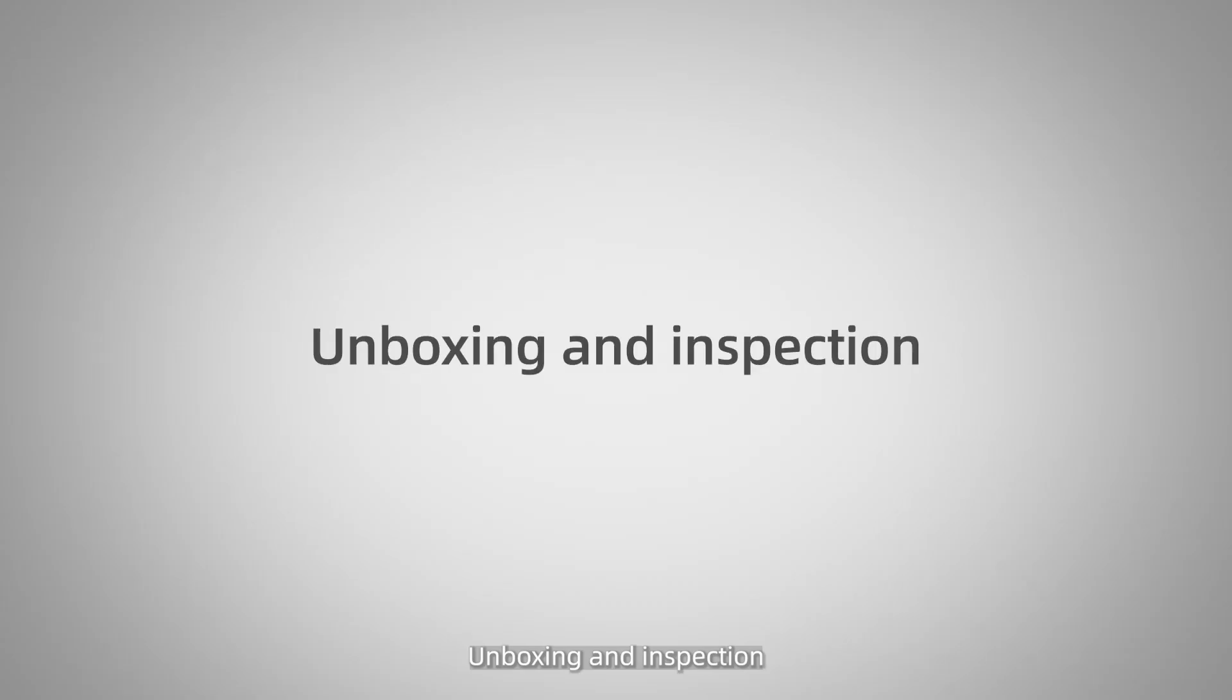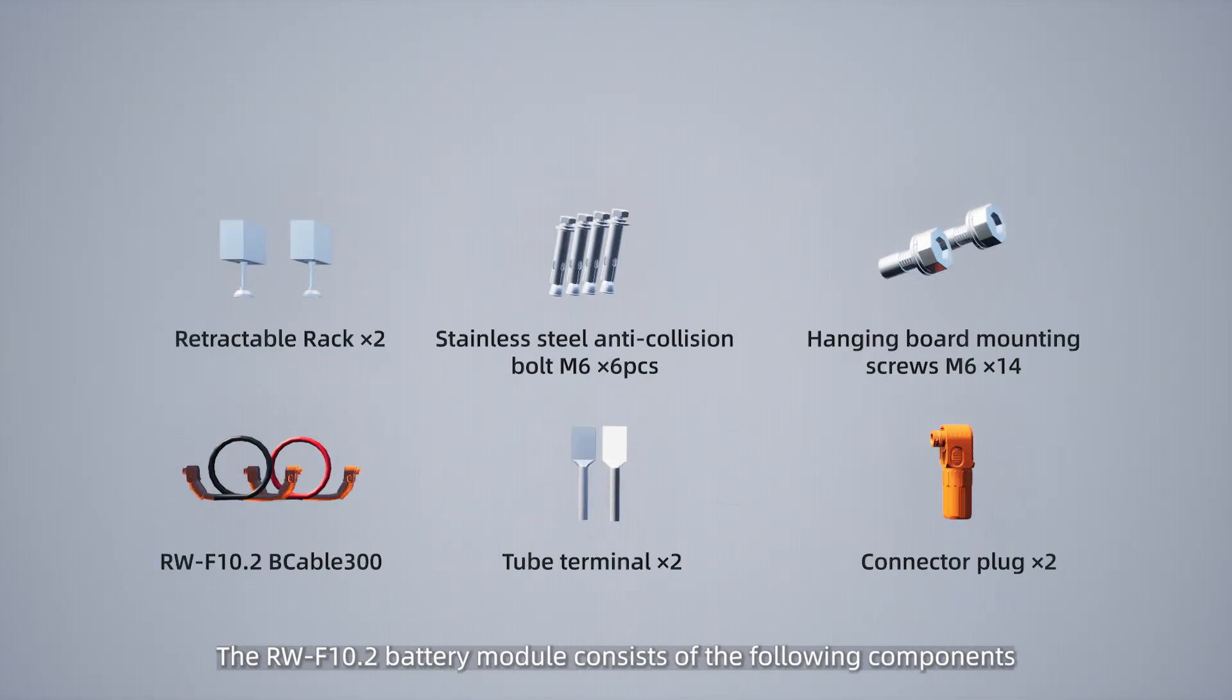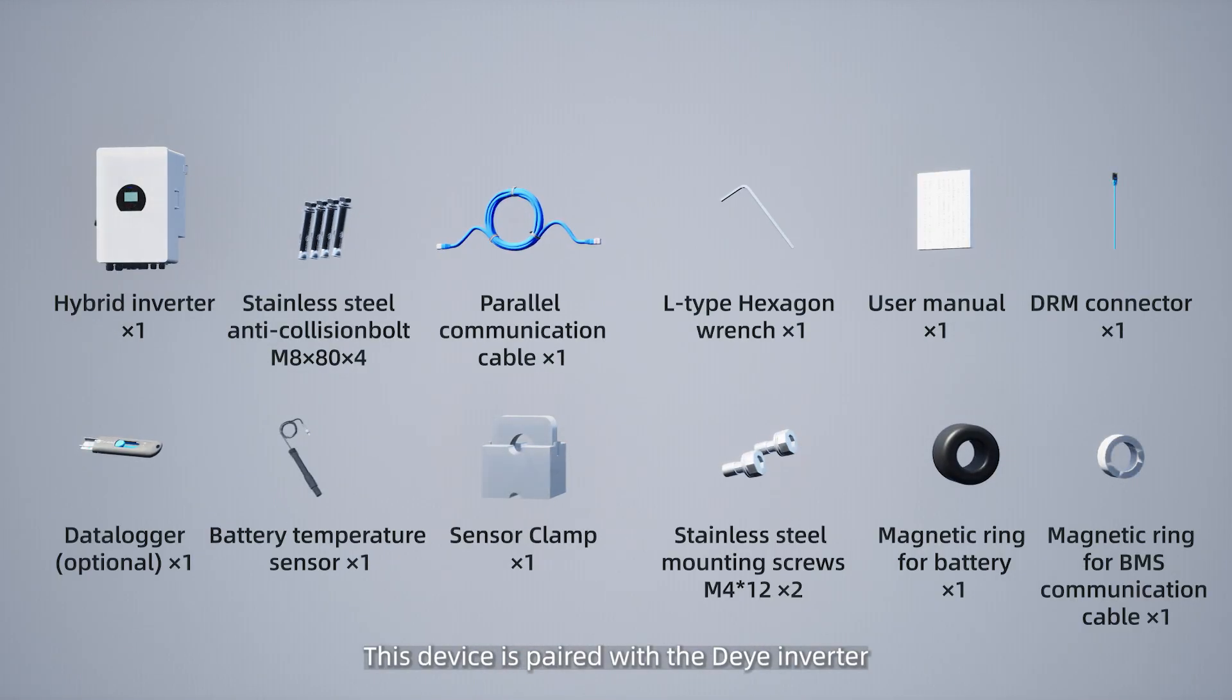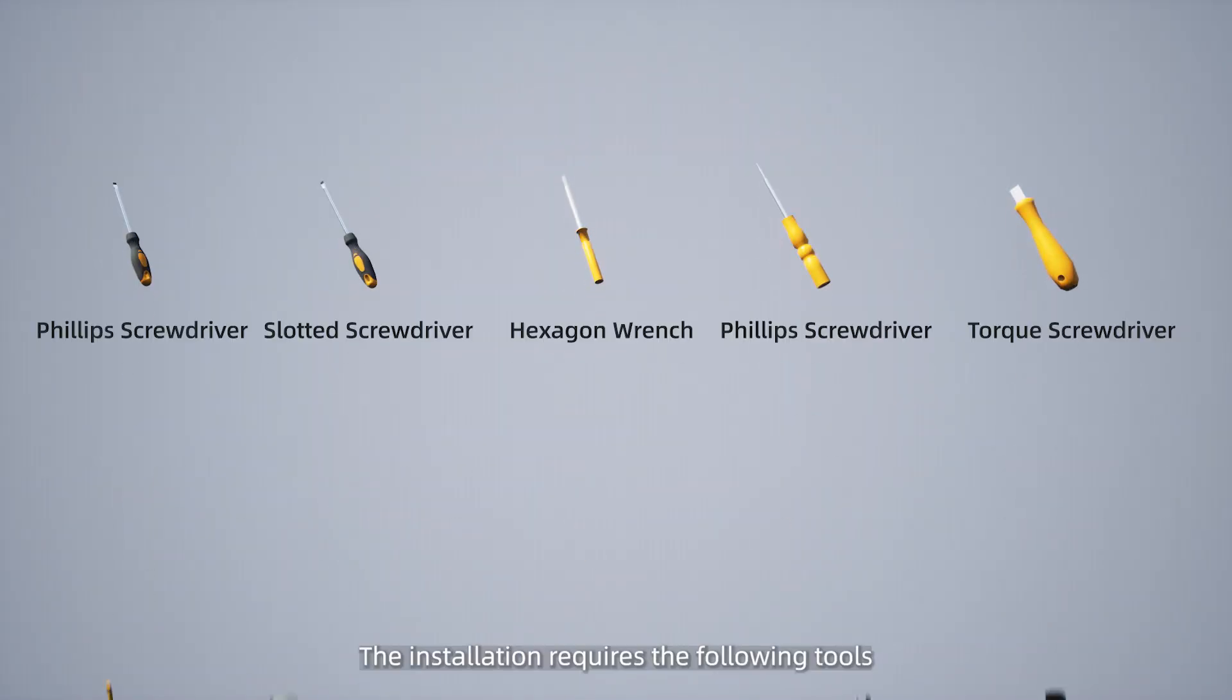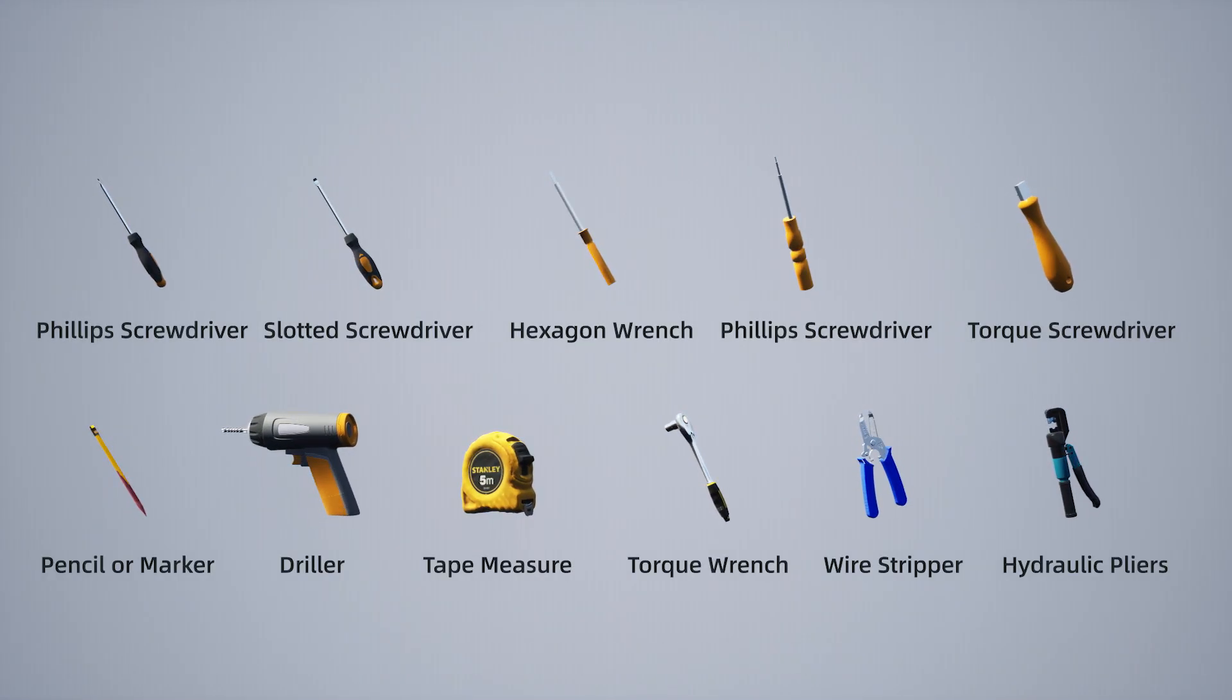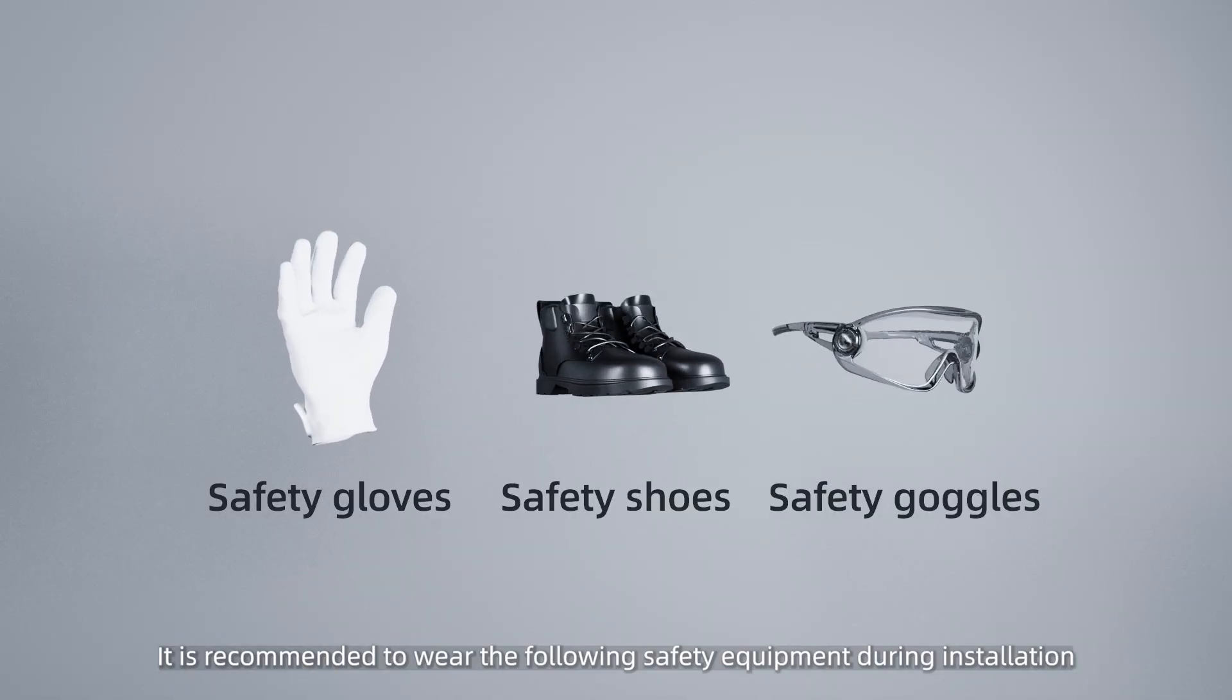Unboxing and Inspection. The RWF10.2 Battery module consists of the following components. This device is paired with the Døya Inverter which includes the following components. The installation requires the following tools. It is recommended to wear the following safety equipment during installation.